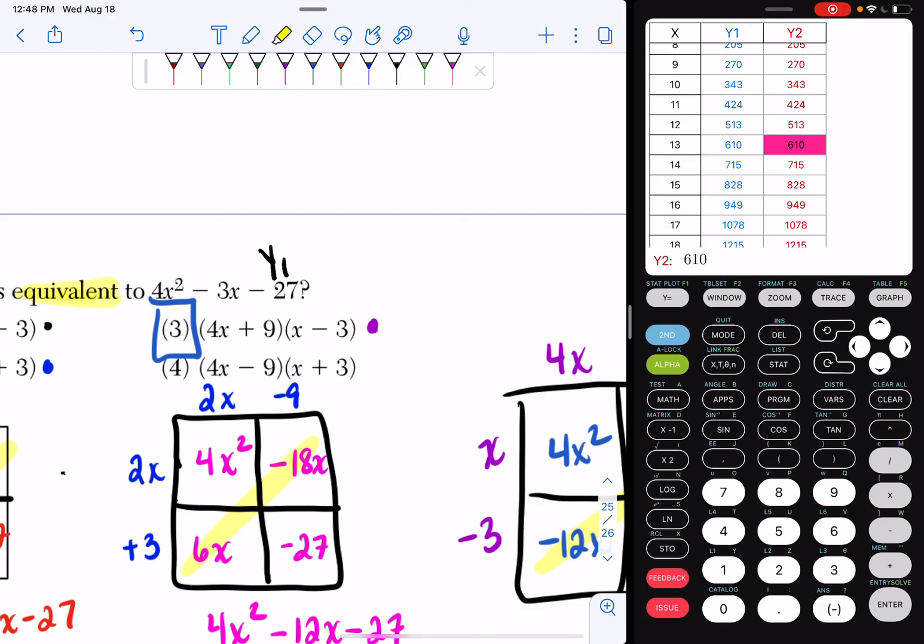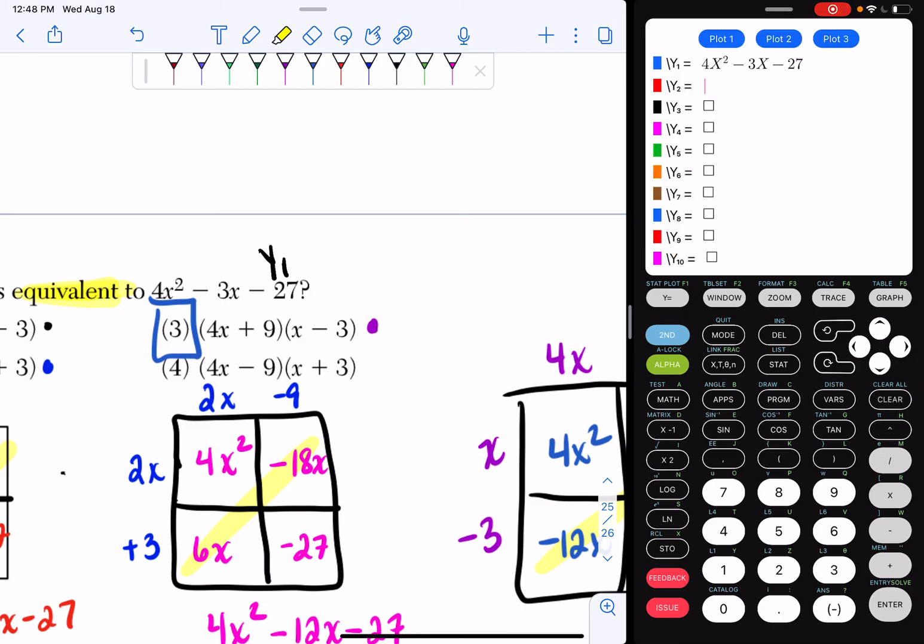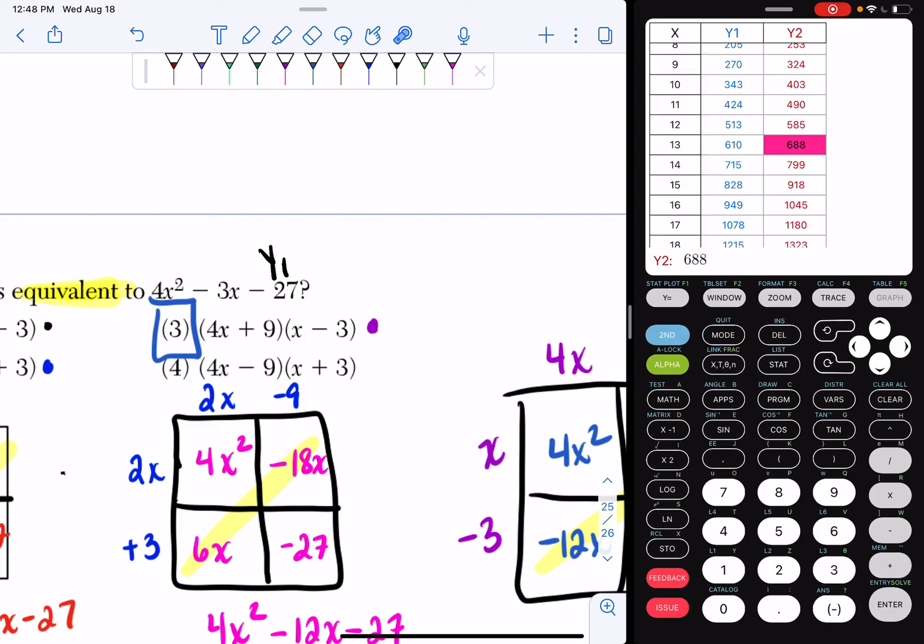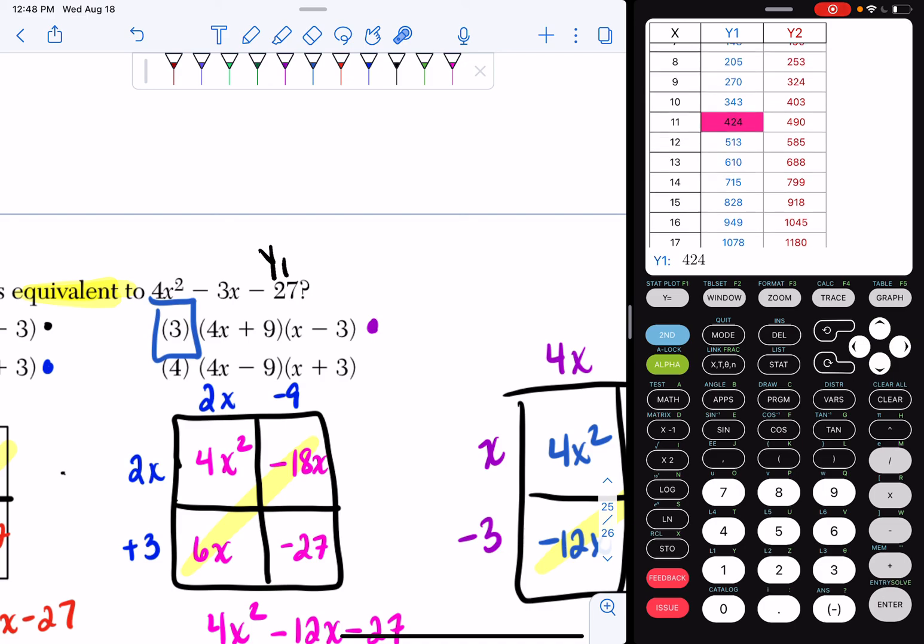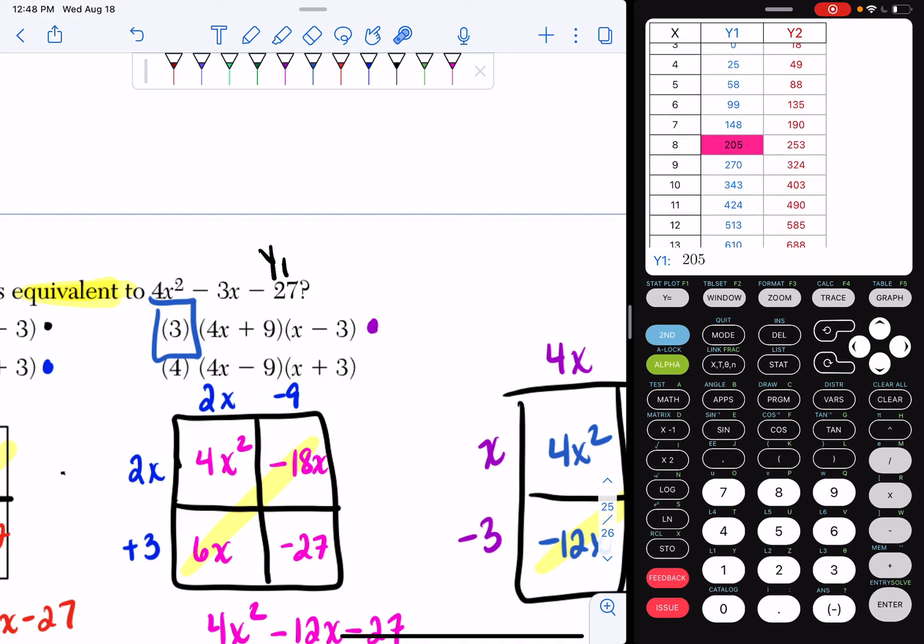Because it's all going back to equivalent. If I wanted to, I could type in choice 4 to show you how it's wrong. So I have 4x minus 9 times x plus 3. I'm going to hit second graph. And if you look, your table of values are not the same. They're not equivalent. So it has to be choice 3.